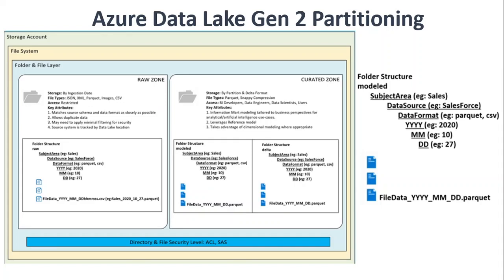Next and last is Azure Data Lake Gen2 partitioning. From the designing Azure Data Lake Gen2 video, we discussed that the folder structure should follow: subject area, date, year, month, and day. We saw how to manually create this structure, but that's not how things work in the real world. In practice, code — from Azure Synapse Analytics, Databricks, or Spark — must create these structures automatically as data is stored.